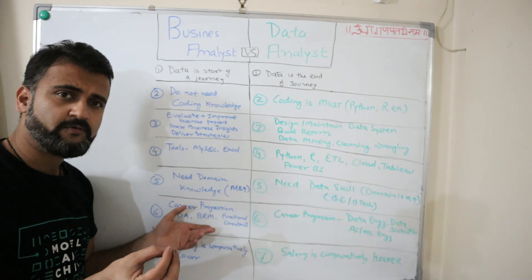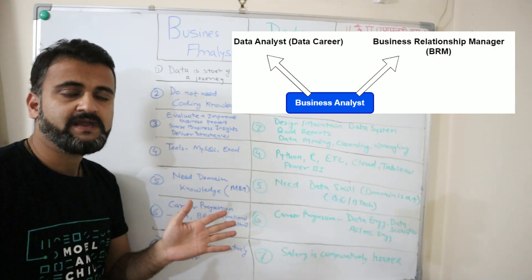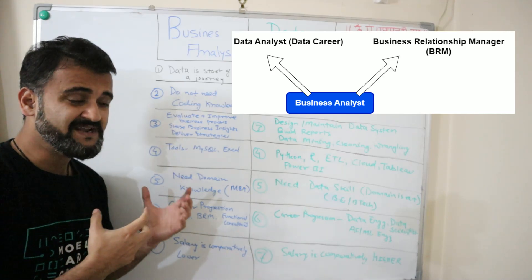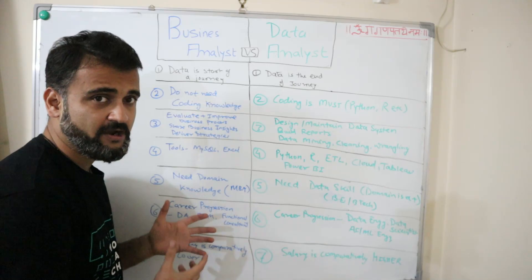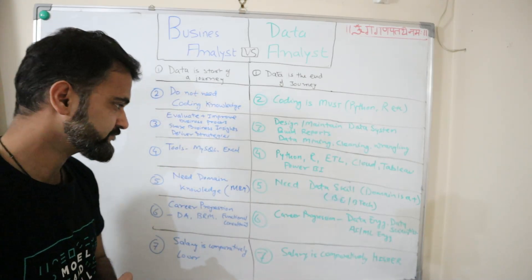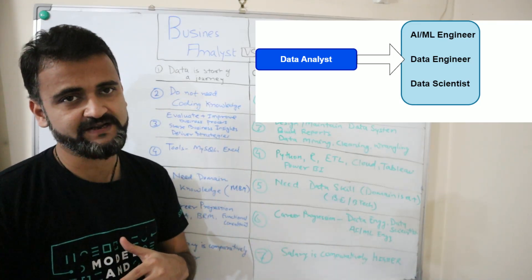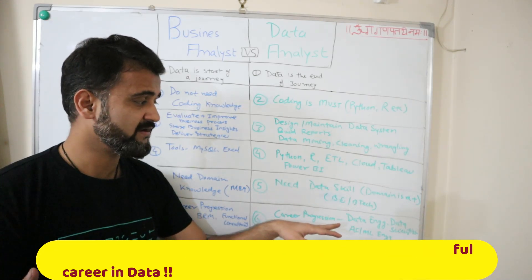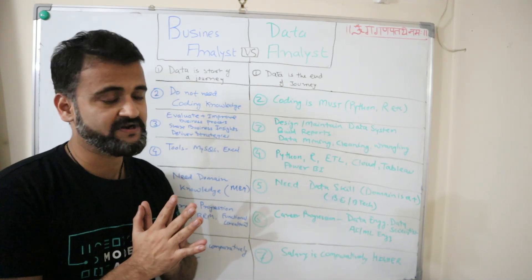For career progression, a business analyst can move into a data analyst role and follow a completely data-related career, or they can take a different route toward business relationship manager or functional consultant, leveraging their business domain knowledge. The demand and salary are higher on the technical side. For a data analyst, there is a very clear path: data analyst, data engineer, data scientist, and AI or ML engineer. Data analyst is just the entry point. If you know one programming language, one ETL tool, data warehousing, and data science concepts, this can be a very strong career progression.